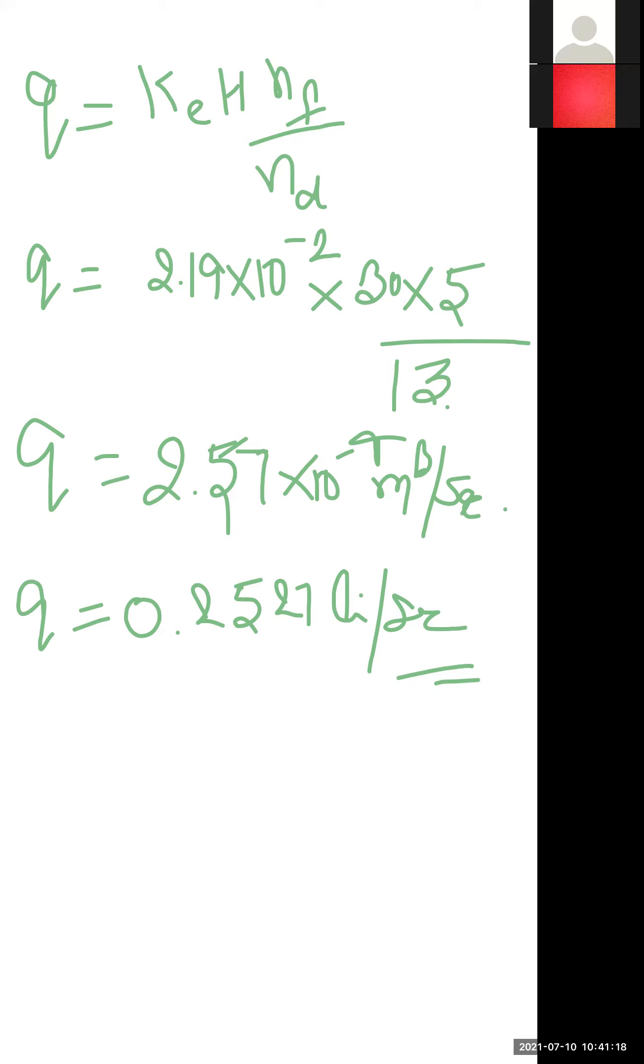The properties of a flow net: first, the flow lines and equipotential lines meet orthogonally. The quantity of flow through each channel remains the same, and the head loss between any successive equipotential lines is the same.